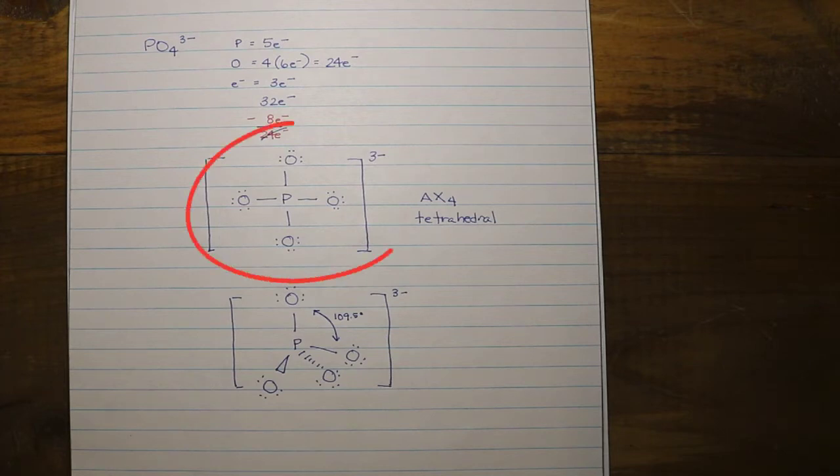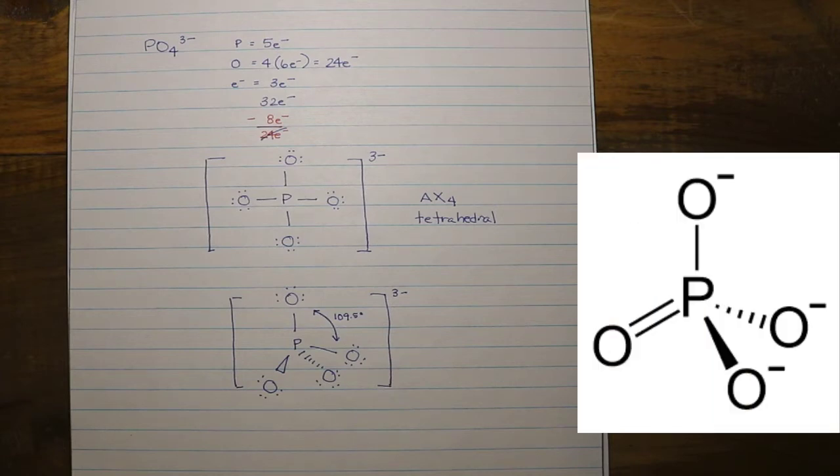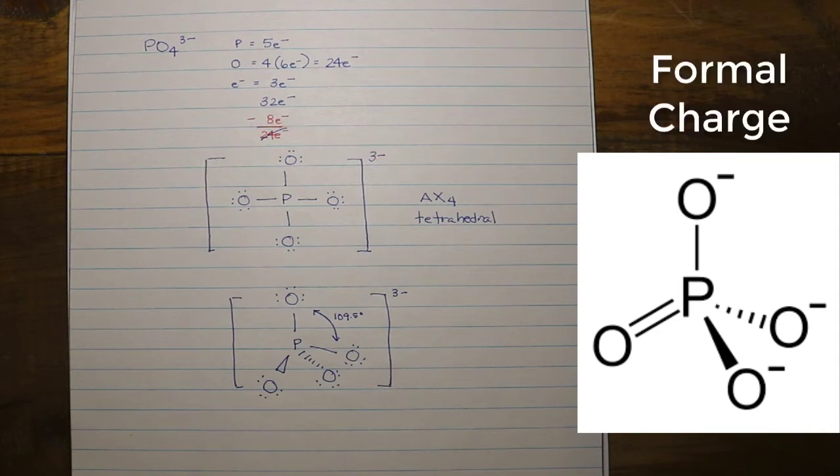If you drew this two-dimensional structure, kudos, because it matches mine, but if you looked up the actual structure of the phosphate ion on the internet, it would not look like that. It would look like this. Now, how do we know that the structure of the phosphate ion is actually like this, and not like this? Well, it has to do with something called formal charge.